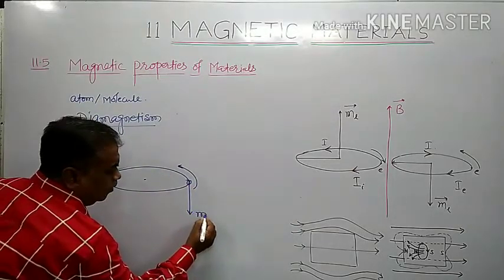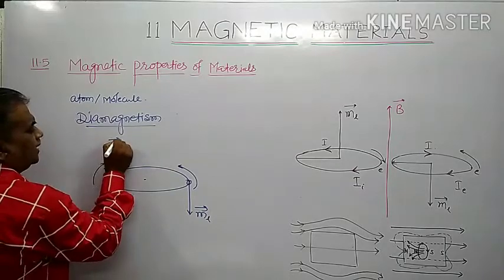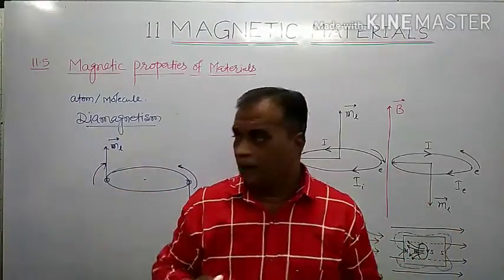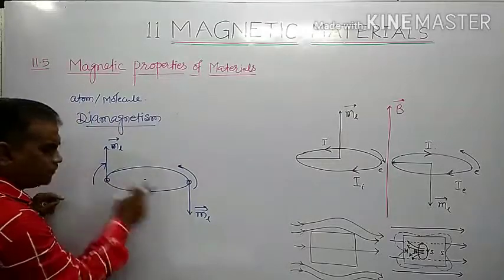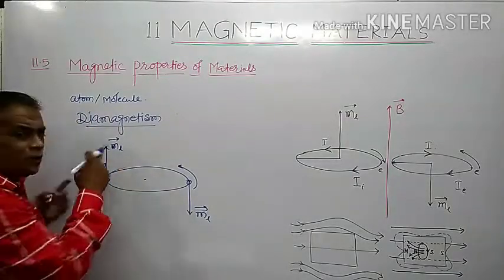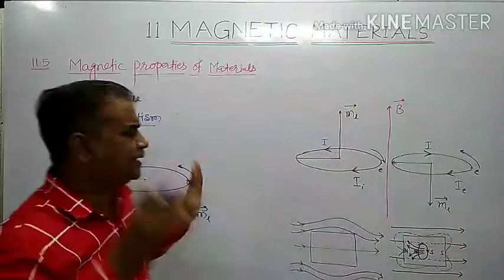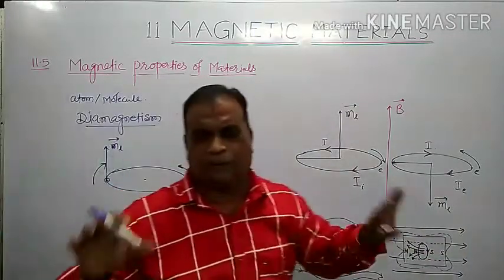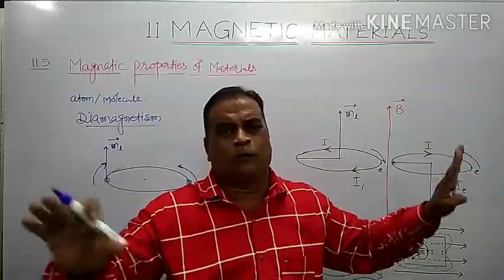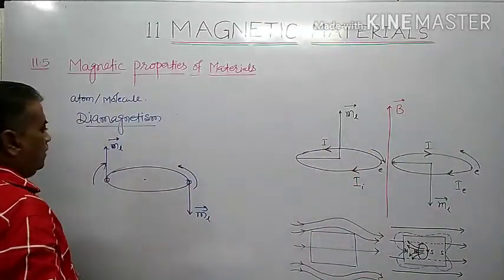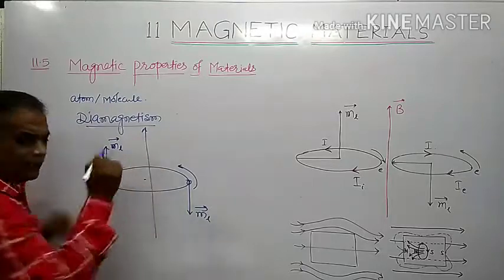Due to this orbital motion, one electron possesses an orbital magnetic moment pointing downward, and the other possesses an orbital magnetic moment pointing upward. The net orbital magnetic moment of the atom is the vector sum of these two, which are equal in magnitude but opposite in direction, hence it becomes zero — they cancel each other's effect.